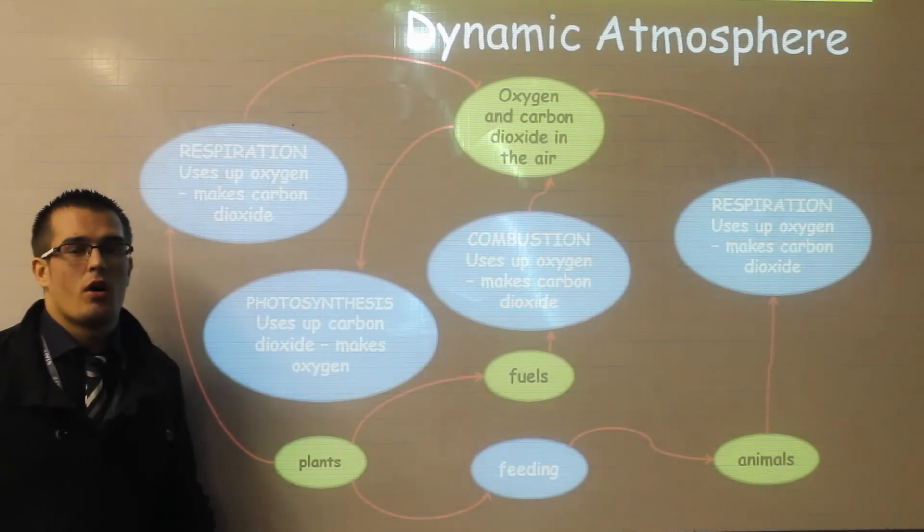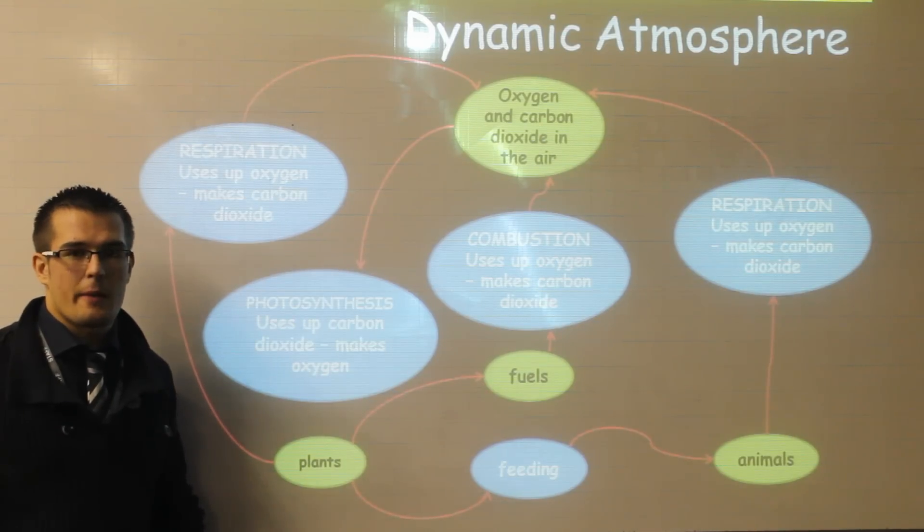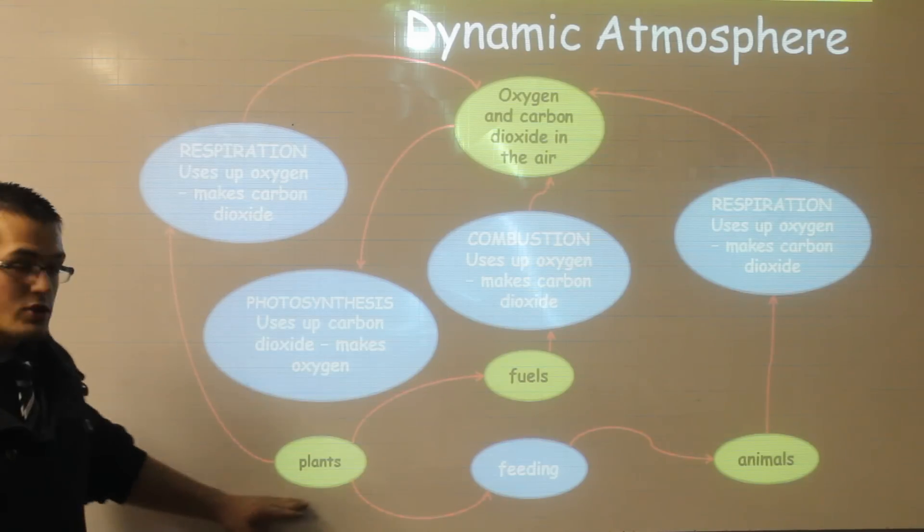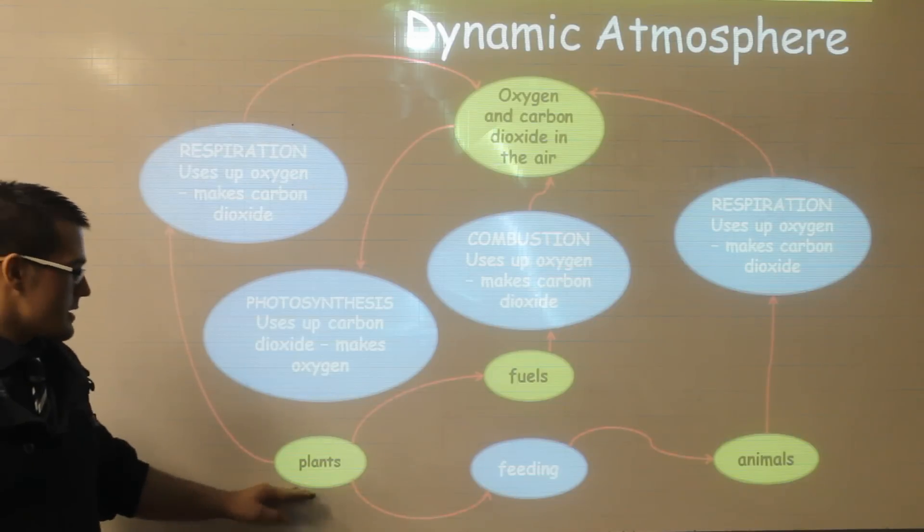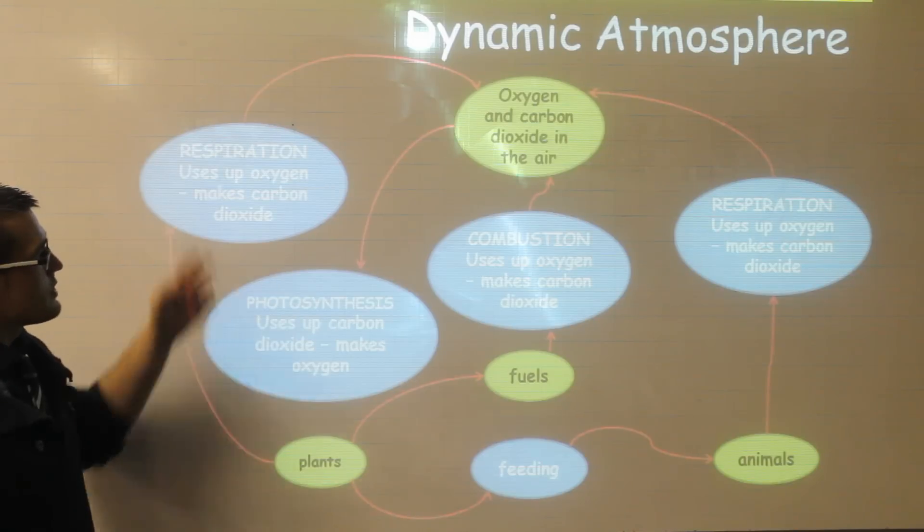We need to understand how oxygen and carbon dioxide levels vary within our atmosphere, and this happened because of several important chemical processes. If we start with plants as your way of remembering this, remember that plants carry out two important processes. The first is respiration.